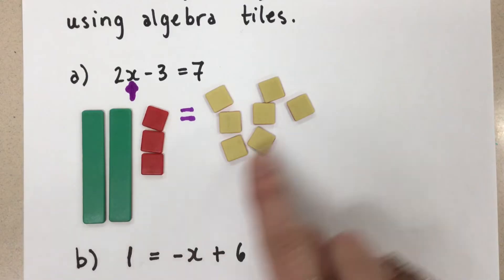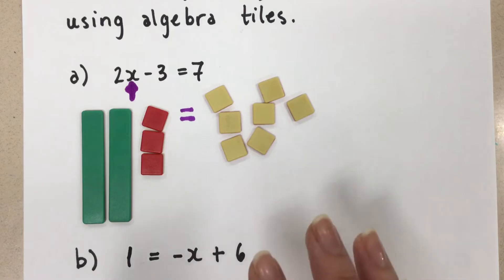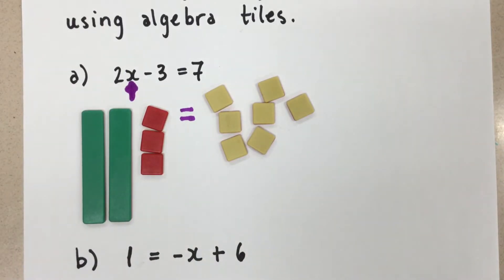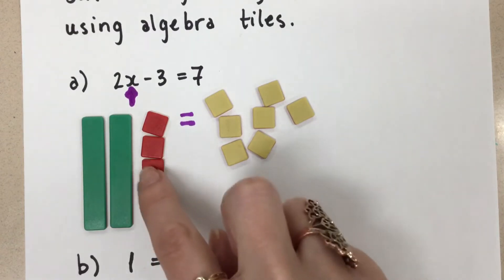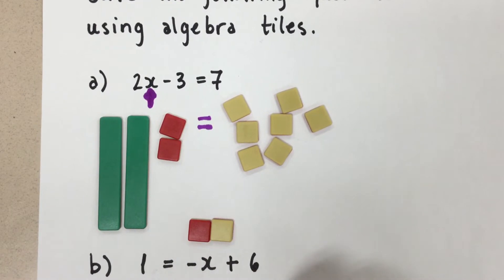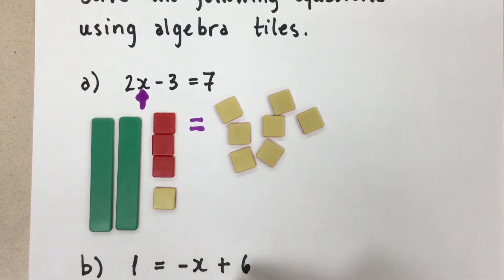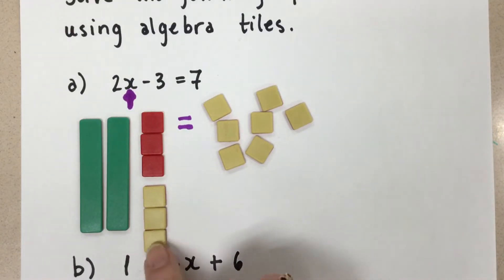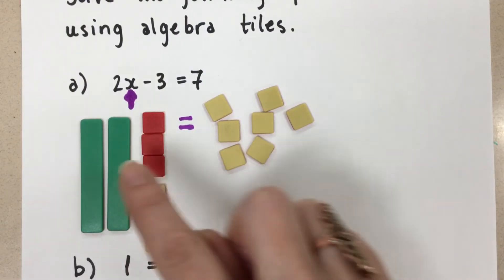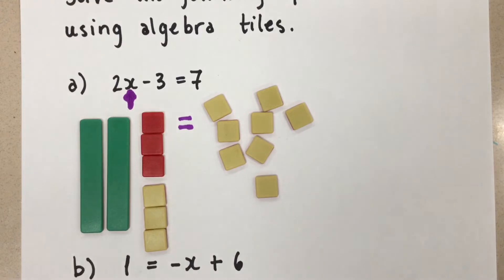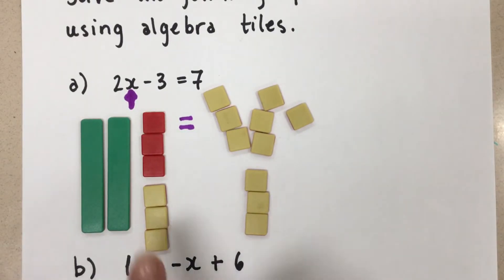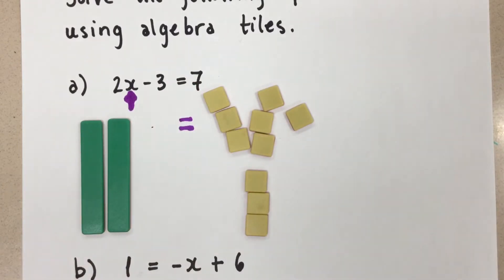We can't just move them over because then our equation is not balanced. What I can do is add the equal amount to both sides in order to get rid of those minus 3. Remember we talked about zero pairs — a zero pair is when we have a negative tile and a positive tile of the same size, like a negative 1 and a positive 1; together they make zero. So if I want to get rid of negative 3, I add positive 3, because those will all become zero pairs. But if I add 3 to this side, I need to also add 3 to the other side to keep the equation balanced.